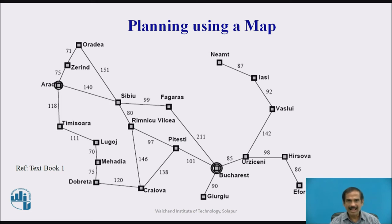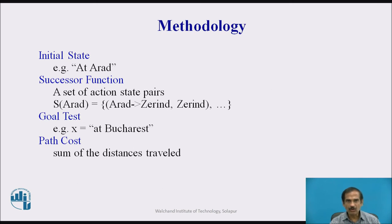We now look at planning for touring cities using a map. Different cities are connected by weights representing distances or costs to travel between them. The initial state is set to being at Arad, and a successor function provides action-state pairs going from Arad to Zerind and onward. The goal test is to reach Bucharest, finding a path with the sum of distances travelled.